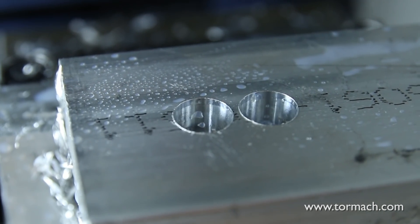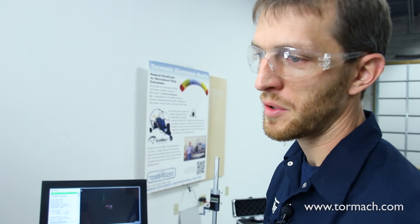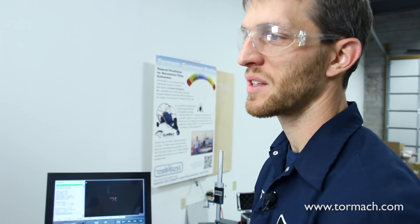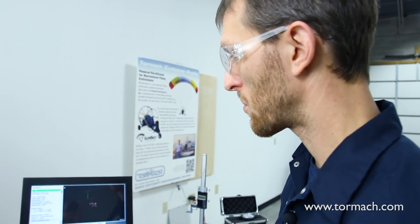So again, that was creating two holes without drilling in the PathPilot conversational routines using the pocketing toolpath. An alternative approach to that, which is probably my preferred approach just because I've used it for so long, is to actually use a thread milling cycle. I'll show you guys how to do that as well.